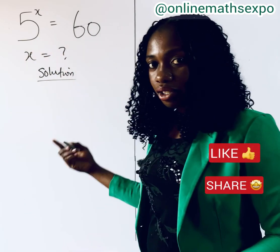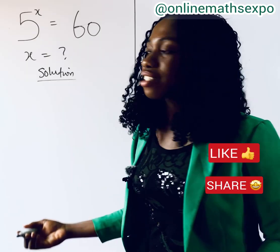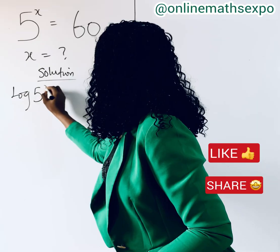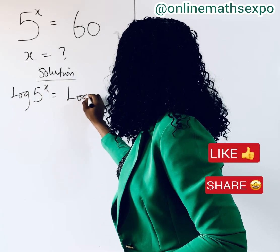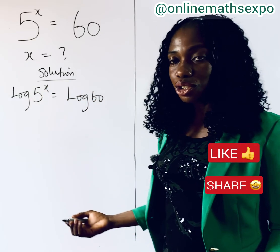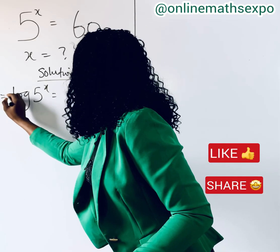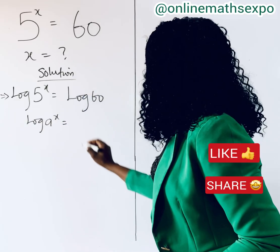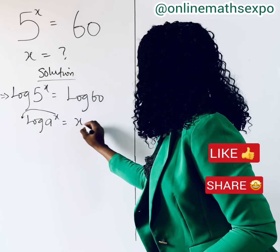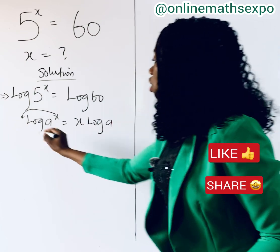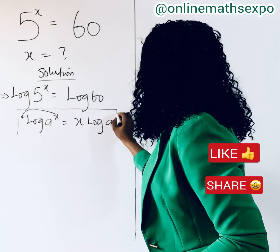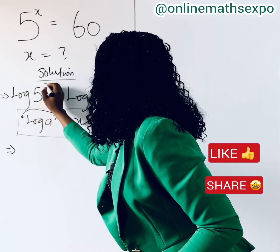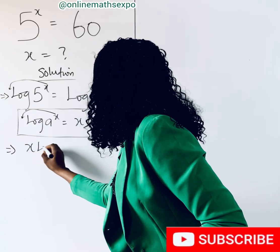We need to get x, so we are going to take the log of both sides — it helps us to get the value of x. So we're going to have: log of 5 to the power of x is equal to log of 60. Now remember this rule of logarithm: if you have log(a) to the power of x, it is the same as using that power to multiply the log. So we apply this rule and bring the x in front: x · log 5.